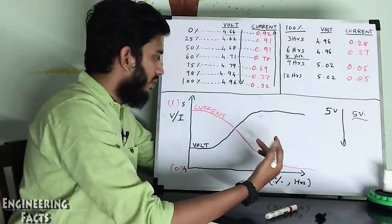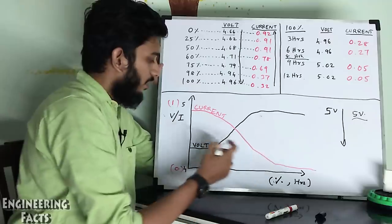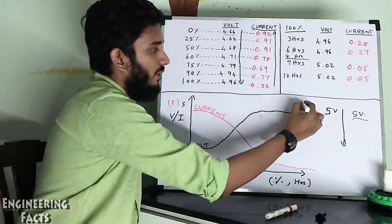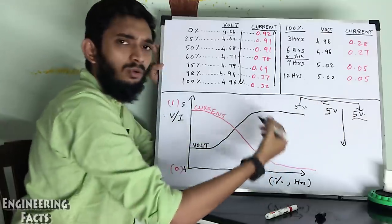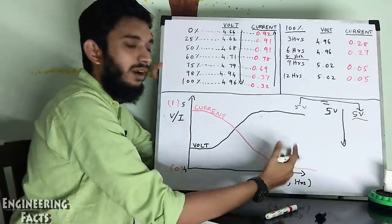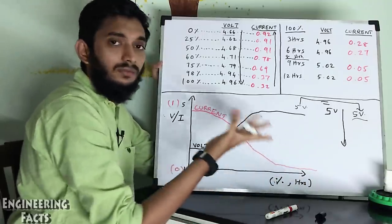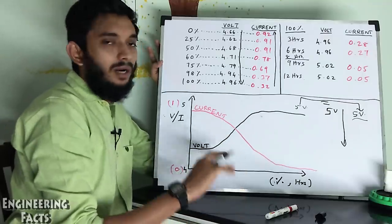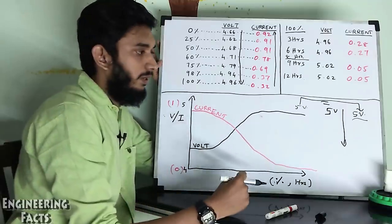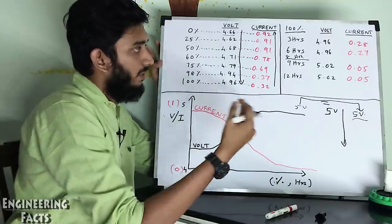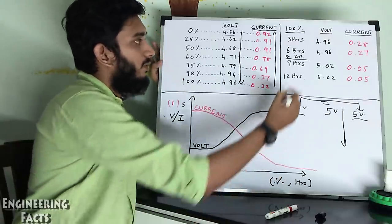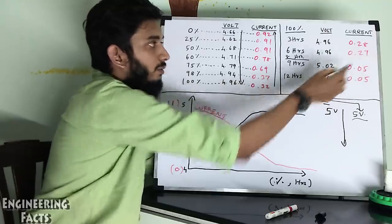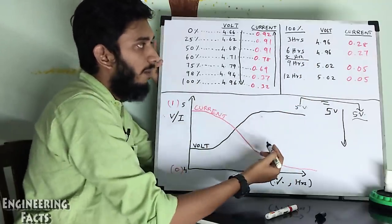At a certain point the voltage will reach 5 volts, and then the charger and mobile voltage will be equal. So the current equalizes, and the charging function is considered complete. The device will still be enabled for the charging function. At 8 hours with the battery switched in, we have about 4.96V and 0.27A.